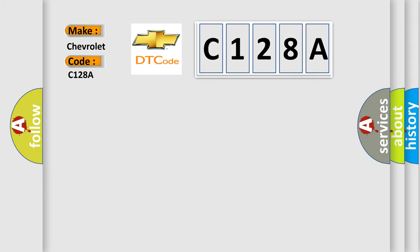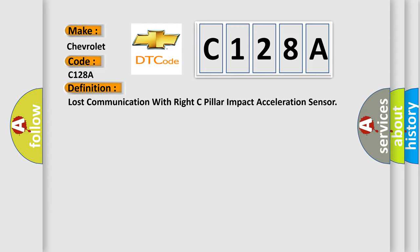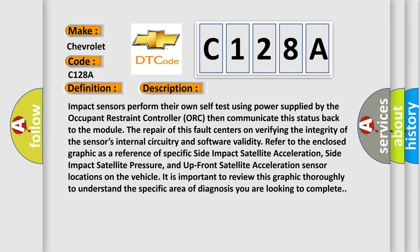The basic definition is Lost communication with right C-pillar impact acceleration sensor. And now this is a short description of this DTC code. Impact sensors perform their own self-test using power supplied by the occupant restraint controller and then communicate this status back to the module.